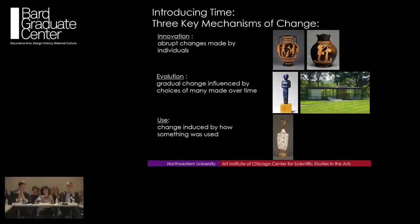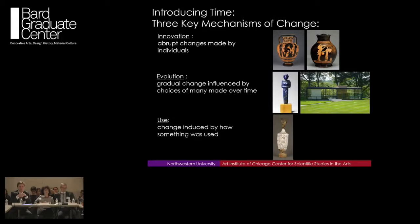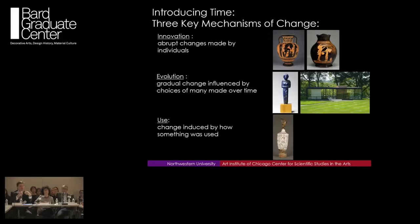My group at Northwestern is trying to adopt three key mechanisms to understand technological change. One is innovation — something that happens over a very short period of time by an individual or group that really changes our understanding of the use of materials. The second is evolution — I use this as a biological analogy to understand how materials change over long periods of time, arguing you can go from a lapis lazuli figurine to Philip Johnson's Glass House in New Canaan, Connecticut. Finally there is use — understanding how materials were used through the material vestiges present on an object.